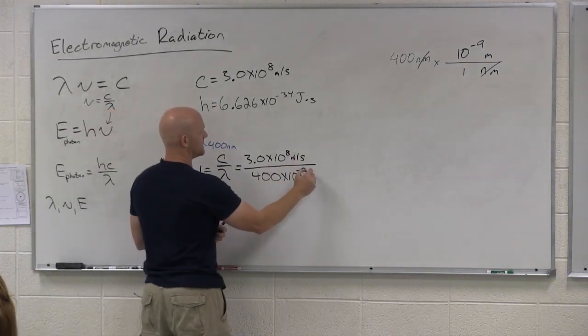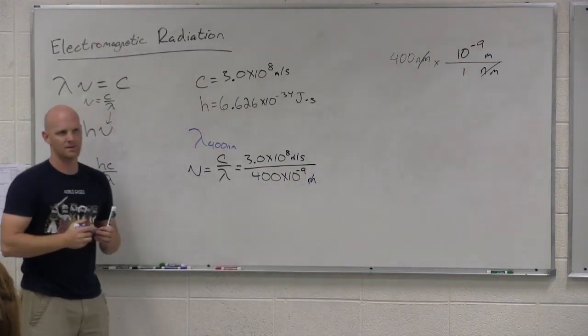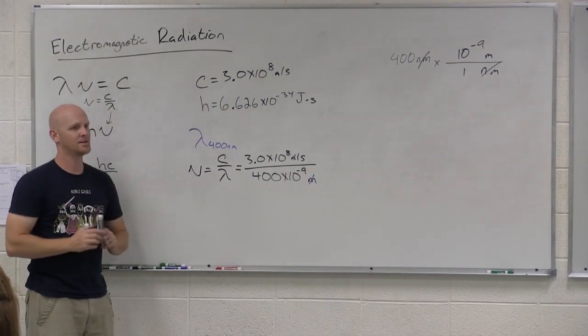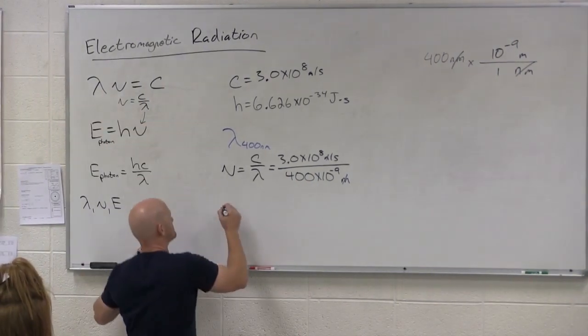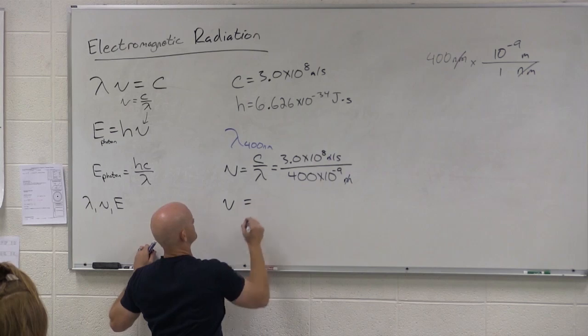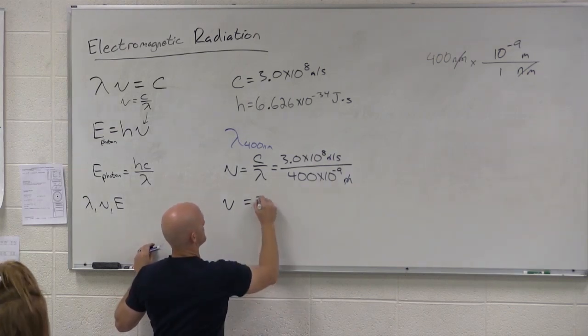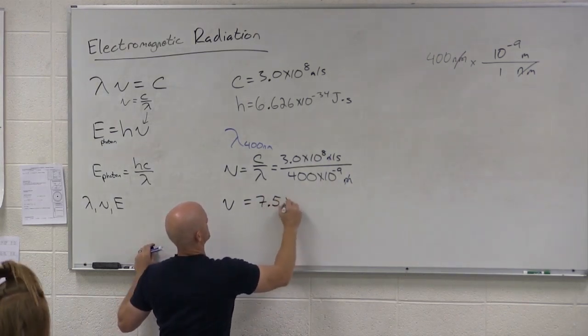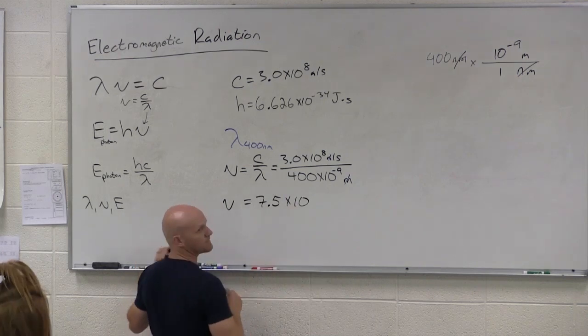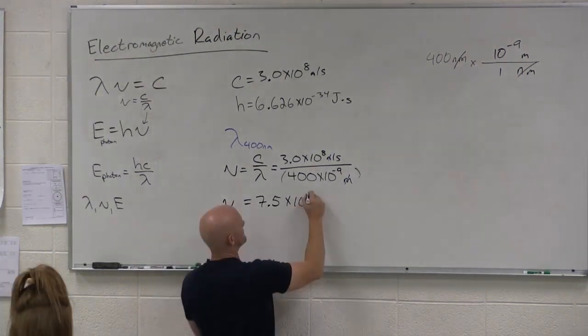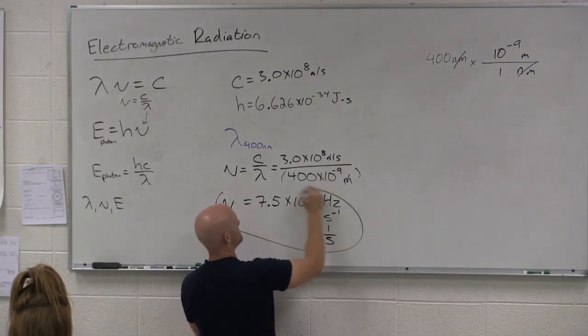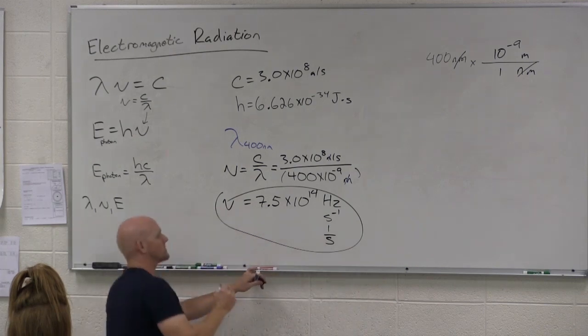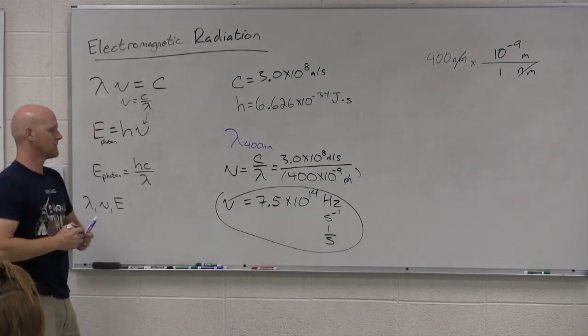The meters are going to cancel, and what units is this going to come out in? Per seconds, which is called a Hertz. That equals 7.5 times 10 to the 14. That sounds better. And that's Hertz, which is the same thing again as seconds to the minus 1 or 1 over seconds. Take your pick. But it'll probably be in Hertz as an answer choice on the exam.